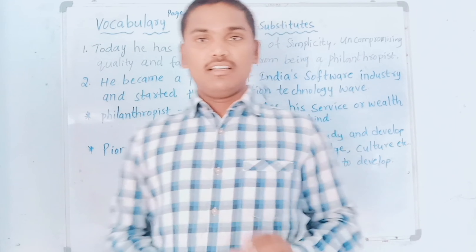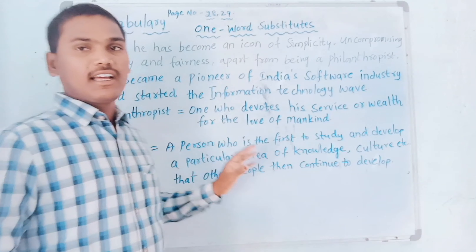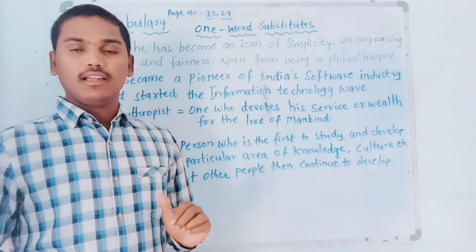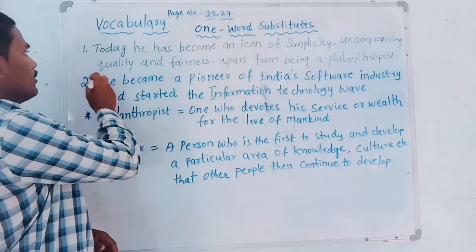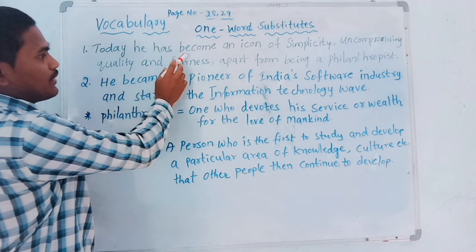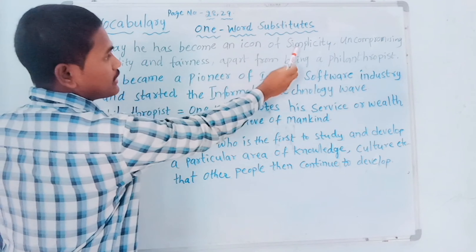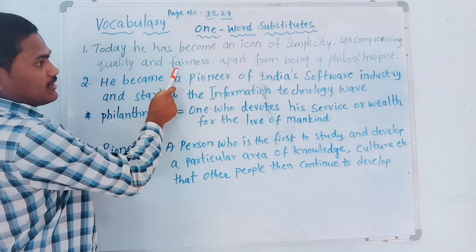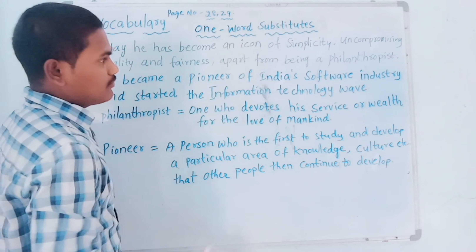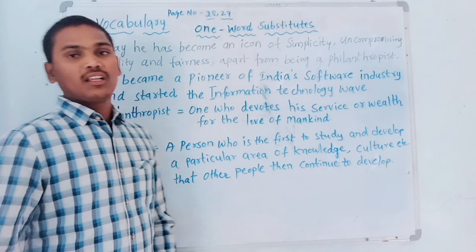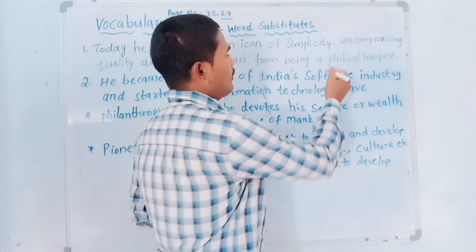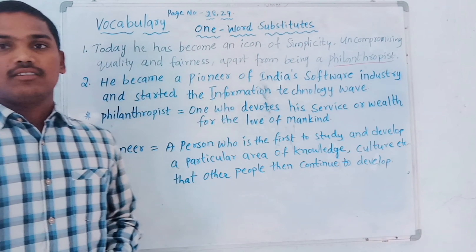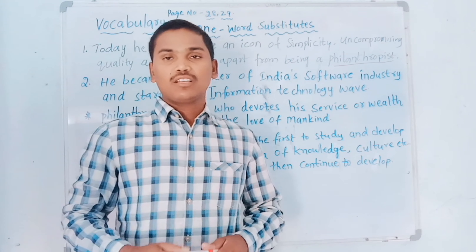Firstly, let us observe what I have written on the board. I have written two examples on the board. Let me read them first for you. Okay, first one: 'Today he has become an icon of simplicity, uncompromising quality and fairness, apart from being a philanthropist.' So in this line, I am underlining 'philanthropist.' What is the meaning of philanthropist?